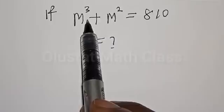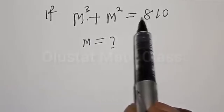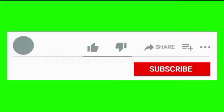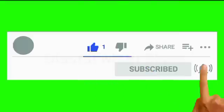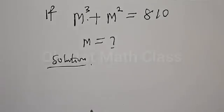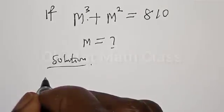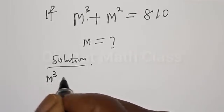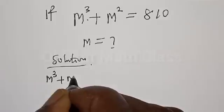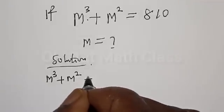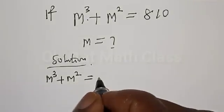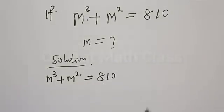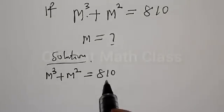m³ + m² is equal to 810. But before we proceed, please don't forget to like, share, comment and subscribe. Thank you. Solution: we have m³ + m² equal to 810.